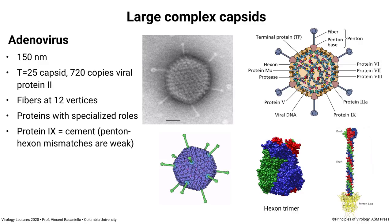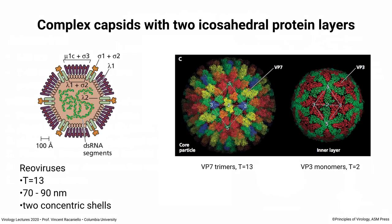Reoviruses are interesting because they're icosahedral non-enveloped viruses with two icosahedral shells — one on the inside and one on the outside. There's double-stranded RNA in the interior, an outer capsid in purple, and an inner capsid in tan. On the right are the two icosahedral shells solved separately. The outer shell is made up of trimers of VP7 with T equals 13 triangulation. The inner layer is made up of monomers of VP3 with T equals 2 — totally different triangulation numbers on these two icosahedral capsids. Next time we'll see that the outer shell protects the virus in the environment, and that's taken off when the particle gets inside the cell to release the genome from the inner shell.